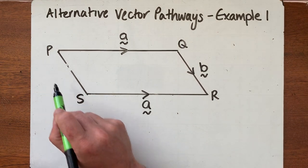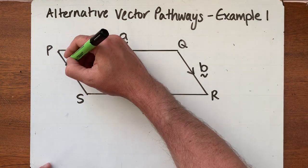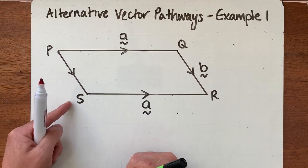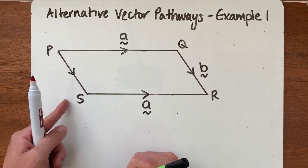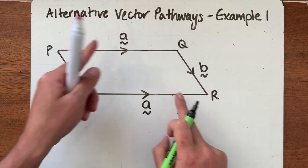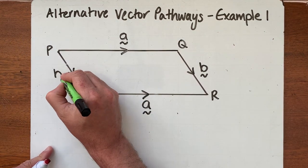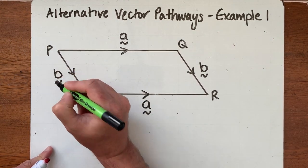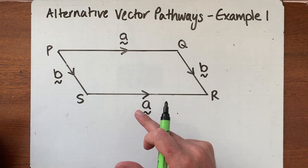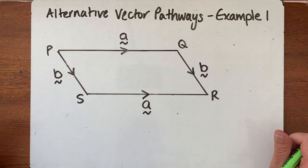Similarly, PS — if I go from P to S in that direction, it's the same size and goes in the same direction as vector 'b'. So actually on this diagram we have two vector a's and two vector b's that maybe we couldn't see initially.